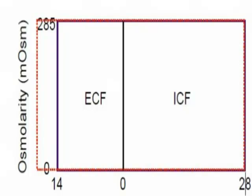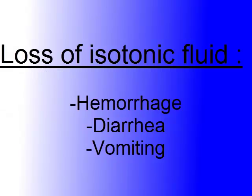The reason both compartments are at 300 milliosmoles is to maintain a net body fluid movement of zero. When there is a disturbance in this osmolarity, body fluid movement occurs. In the graph shown, the x-axis represents volume and the y-axis represents the concentration of solute, with both intracellular fluid and extracellular fluid plotted.